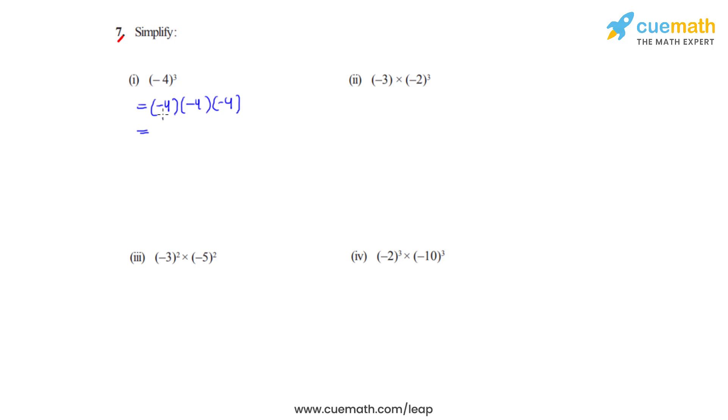Now negative 4 times negative 4 becomes 16 because negative times negative becomes positive, and that is to be multiplied to negative 4. So that gives us the answer as negative 64.